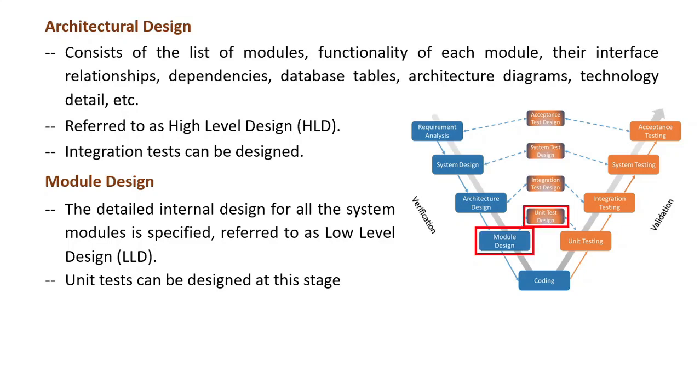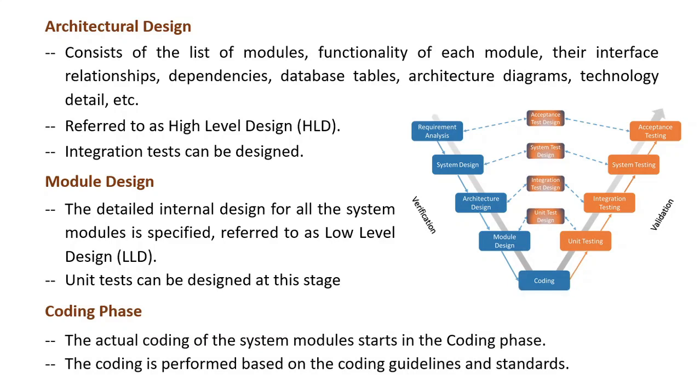Next is the coding phase. The actual coding of the system modules starts in the coding phase. The best suitable programming language is decided based on the system and architectural requirements. The coding is performed based on the coding guidelines and standards. The code goes through numerous code reviews and is optimized for best performance before the final build is checked into the repository.